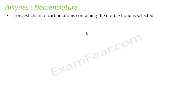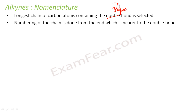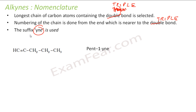For nomenclature — which we have covered in the past chapter — you find the longest chain that contains the triple bond. Numbering is done so that the triple bond gets the lowest number, and you use the suffix '-yne'. For example, a 5-carbon chain with the triple bond at position 1 is pent-1-yne, and with the triple bond at position 2 it is pent-2-yne.